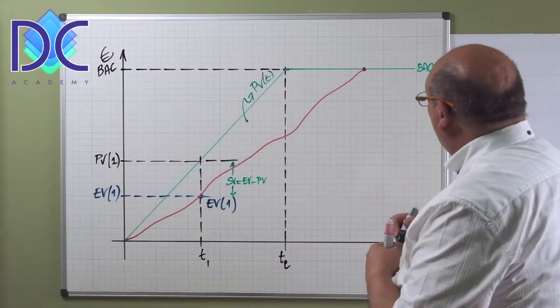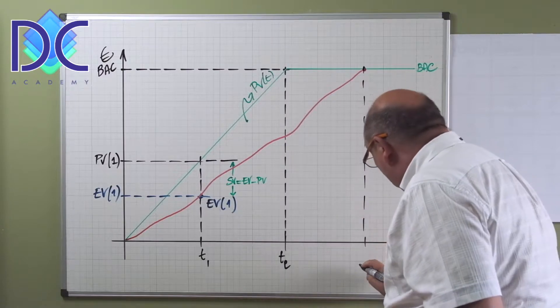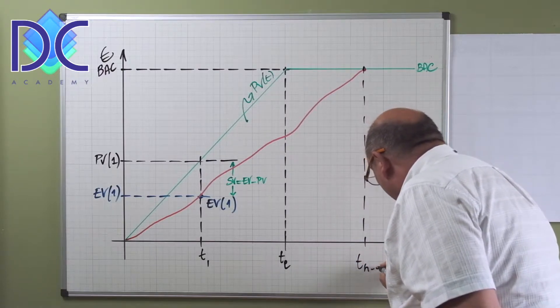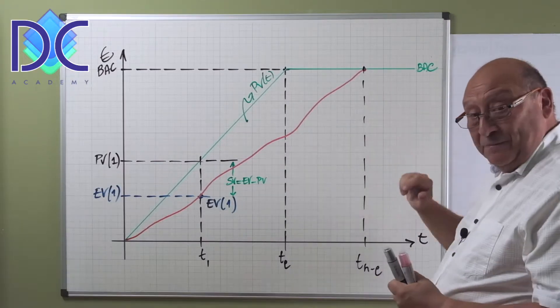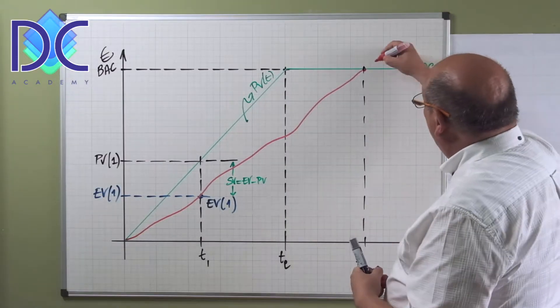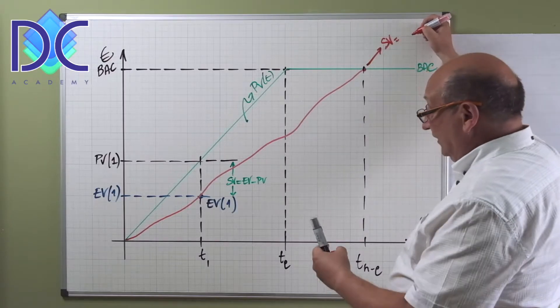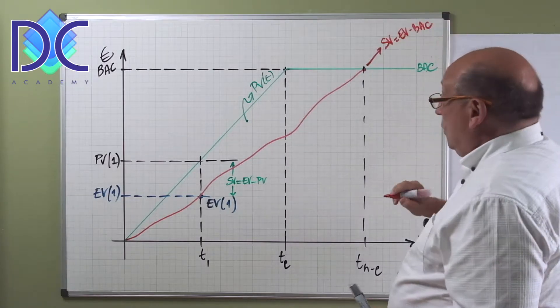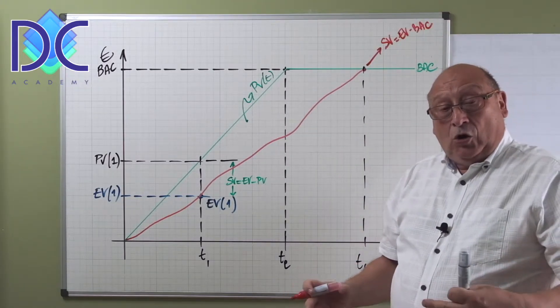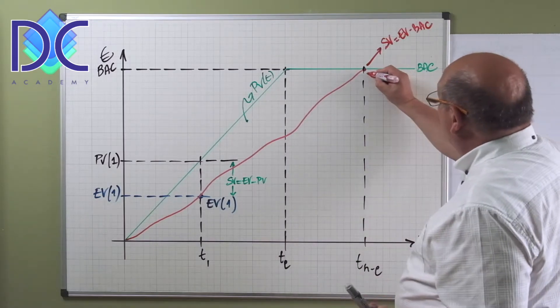Why is this the end of the project? Because here the earned value is equal to the budget at completion. This means that the project is finished, all the work has been completed, and we find a new duration of the project. So we have here down on the t axis t new end.